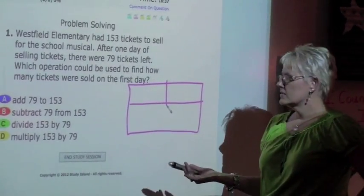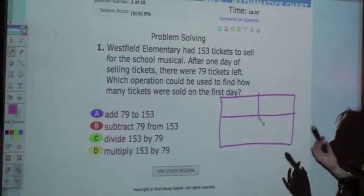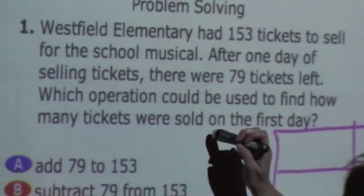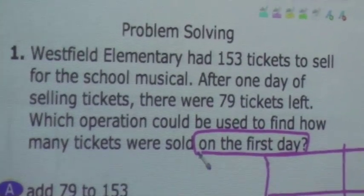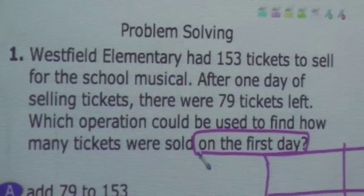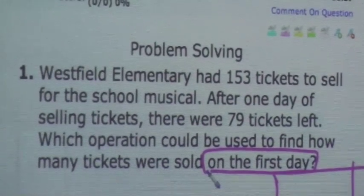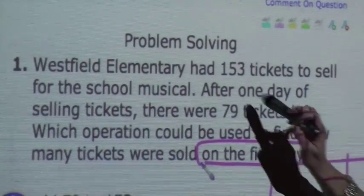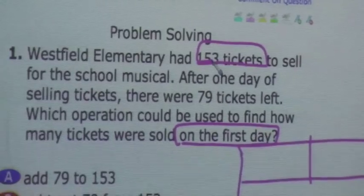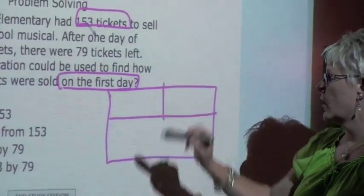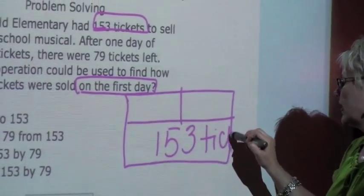I always ask the students: tell me what you know — what are we looking for, what are we trying to find? In this question, we're trying to find out how many tickets were sold on the first day. I ask students whether they're looking for a whole or a total, or do they already have one — something that will not change. And I do: 153 tickets is my whole amount of tickets. That's not changing, so I put 153 tickets in the whole box.